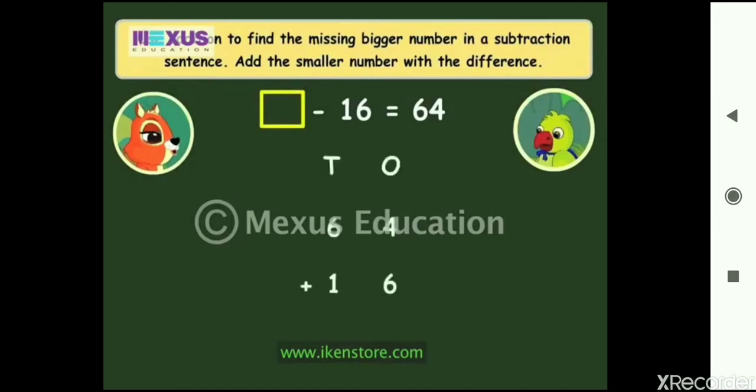We need to add 64 and 16. 6 plus 4 is 10. We write 0 in the ones column on the answer space and carry over 1 to the tens column. 6 plus 1 plus 1 is 8. So we write 8 in the tens column. So the missing number is 80.